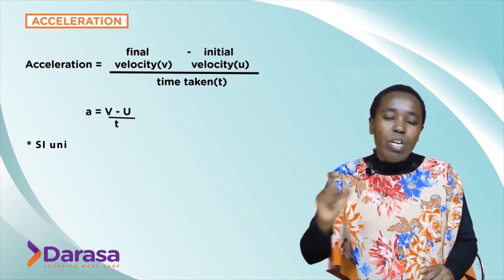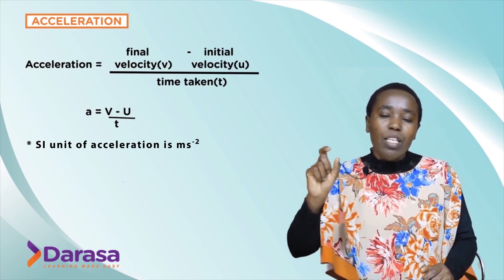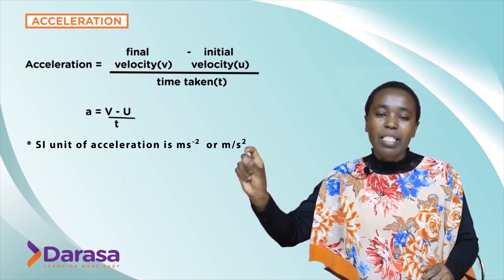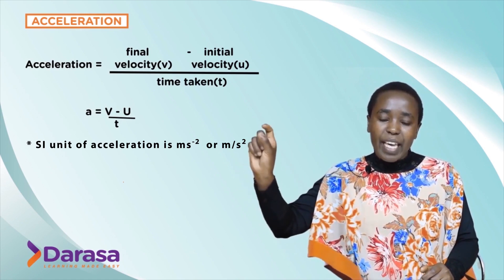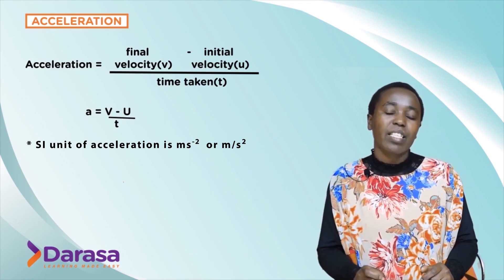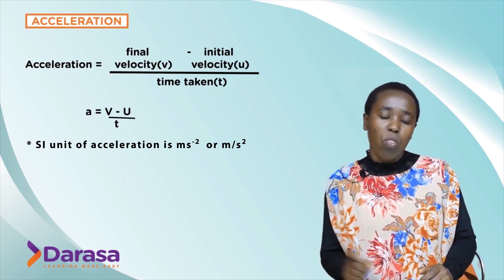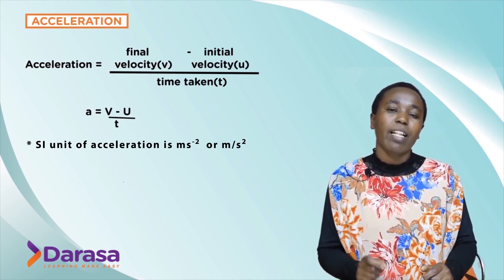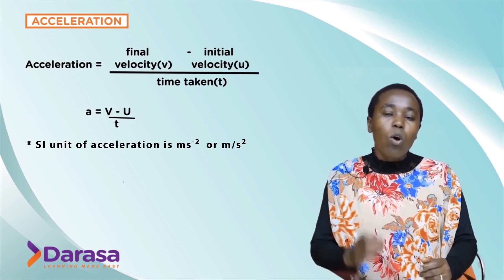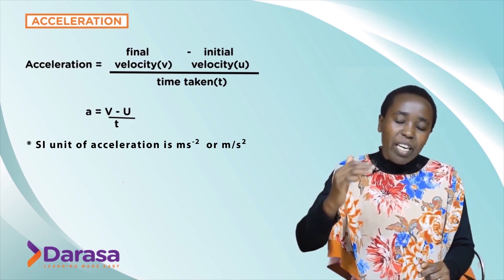The SI unit of acceleration is meters per square second, written as m/s² or m·s⁻². You can use either notation but do not use both together, as that would be repeating yourself.